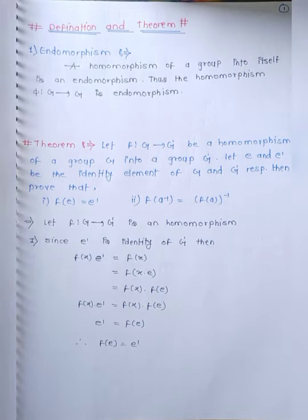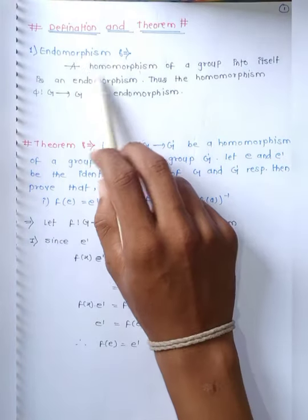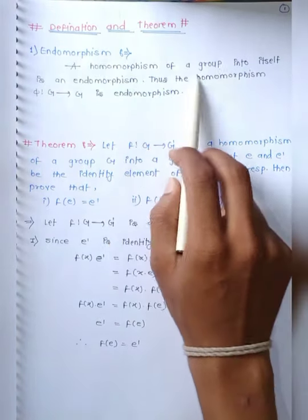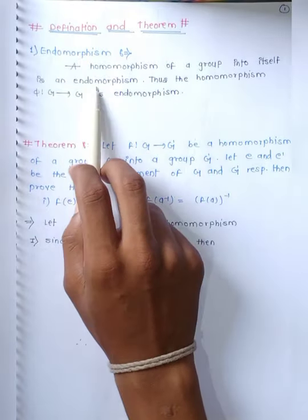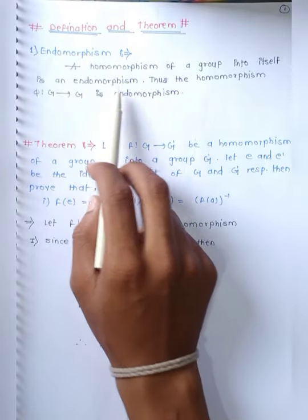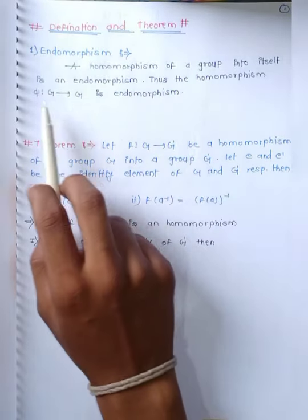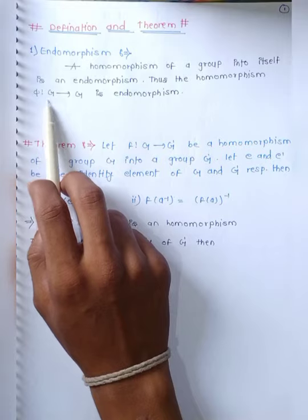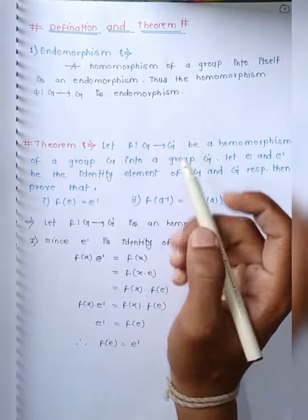What is the definition of endomorphism? A homomorphism of a group into itself is an endomorphism. Thus, the homomorphism F from G to G is an endomorphism — meaning it is a mapping from G to G itself.